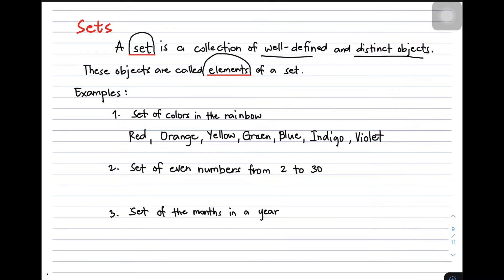We have three examples of sets here. So let's start with item number one. Set of colors in the rainbow. So we know we have something called Roy G. Biv. So what are the colors in the rainbow? So we have red, orange, yellow, green, blue, indigo, and violet.